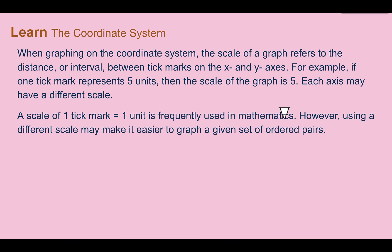Let's learn the coordinate system. When graphing on the coordinate system, the scale of the graph refers to the distance or interval between tick marks on the x and y axes. For example, if 1 tick mark represents 5 units, then the scale of the graph is 5. Each axis may have a different scale. A scale of 1 tick mark equals 1 unit is frequently used in mathematics. However, using a different scale may make it easier to graph a given set of ordered pairs.